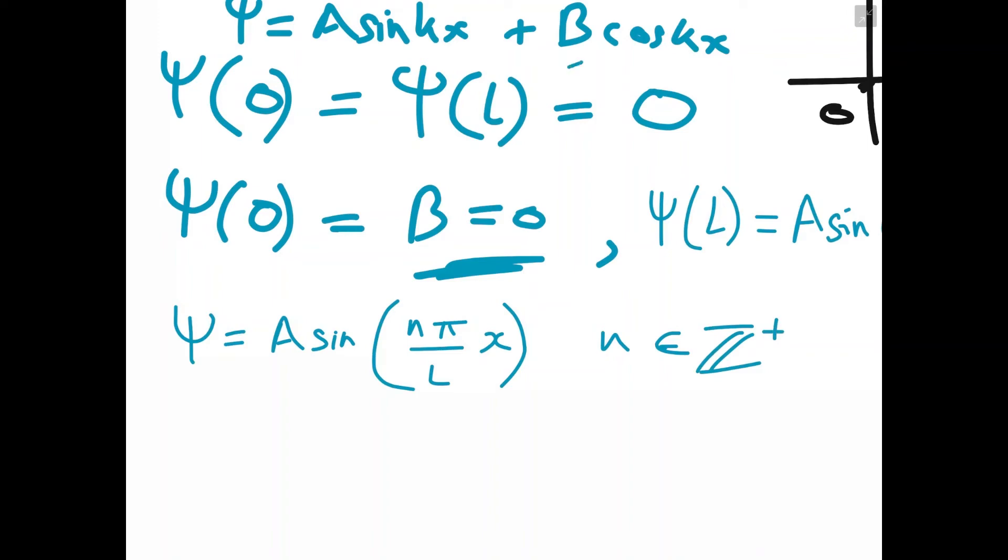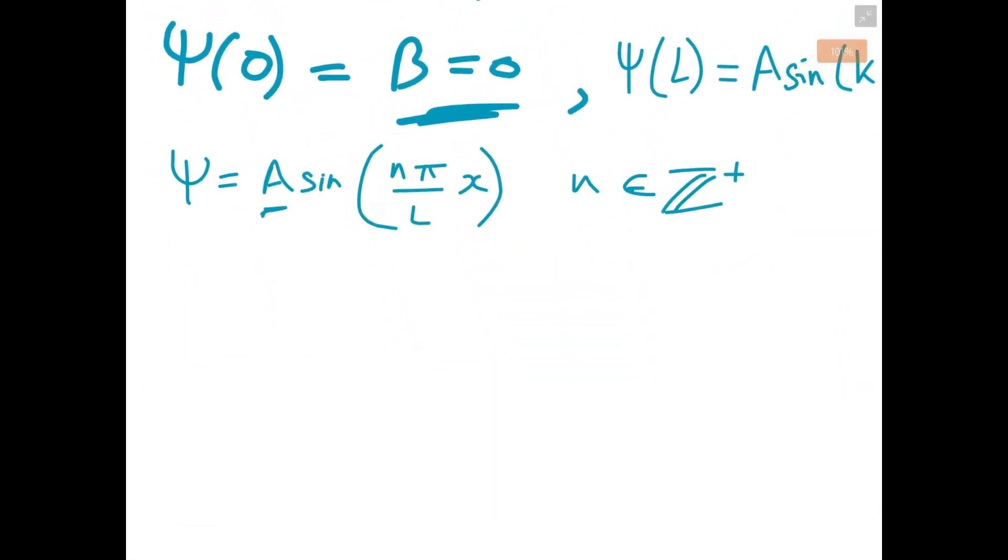So now we use the boundary conditions and we got rid of one of our constants b, but we still have this constant a and we can solve for a using another condition, a normalization condition on probability, which is a fancy way of saying the particle must be somewhere on the x-axis. So if we integrate the probability distribution function over the x-axis, the answer we should get is one. So if we integrate the PDF from negative infinity to positive infinity, it is always equal to one. And since we know the particle must be in the box, this means that the integral from zero to L of ψ² is equal to one.